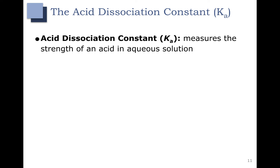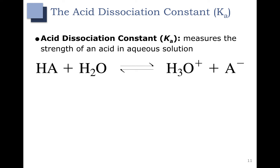Now let's talk about what Ka is. Ka is the acid dissociation constant, so it measures the strength of an acid in an aqueous solution. It's going to tell us something about how strong our acid is. For an acid-base reaction, our base is going to be water. Using a generic acid HA, when water reacts with HA, we get H3O+ (hydronium) and A-. So we have our acid, our base, and we form our conjugate acid and conjugate base.